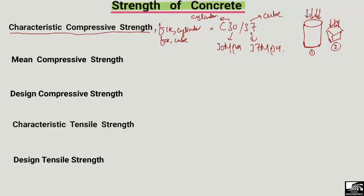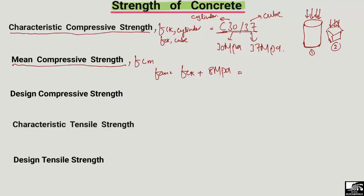Now, what is meant by mean compressive strength? The mean compressive strength is represented by fcm and it is equal to the characteristic strength fck plus 8 MPa. So if we want to find the mean compressive strength of concrete class C30/37, the characteristic cylinder value is 30 MPa, and adding 8 MPa gives us fcm = 30 + 8 = 38 MPa. This is the mean compressive strength of this concrete, taking only cylinder values.